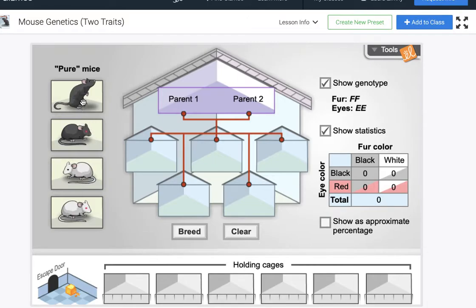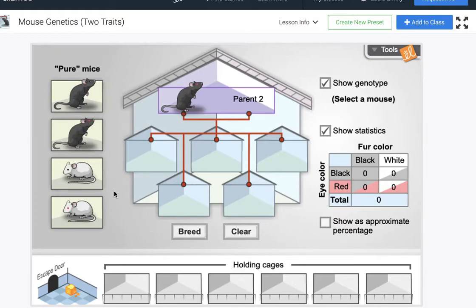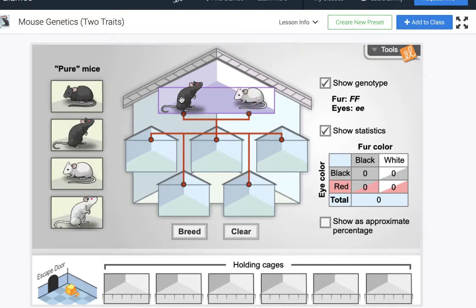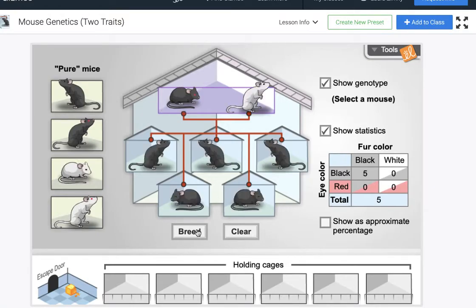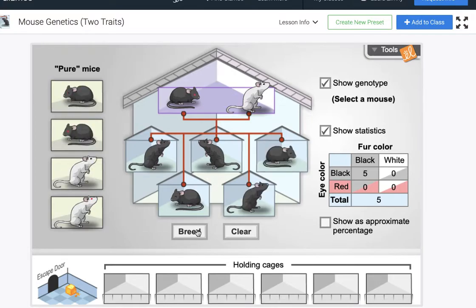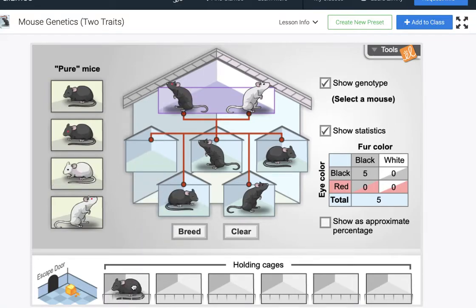All right we'll do one more scenario. Let's breed a mouse that is black with the red eye color with a mouse that is white with the black eye color. So basically we're looking at something that has homozygous dominant traits for black fur color but recessive traits for eye color and then the exact opposite. So if we breed those mice together not surprisingly the recessive trait disappears completely from both which is awesome.